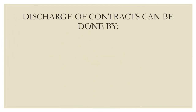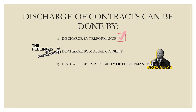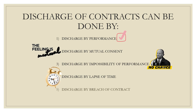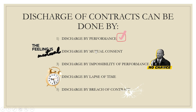There are several ways through which a contract can be discharged or terminated. First is discharge by performance. Next, discharge by mutual consent. Third is discharge by impossibility of performance. Point number four says discharge by lapse of time, and the last is discharge by breach of contract. Discharge by performance means when both the parties have performed their part under the contract, the contract is said to be over because it has been completed.